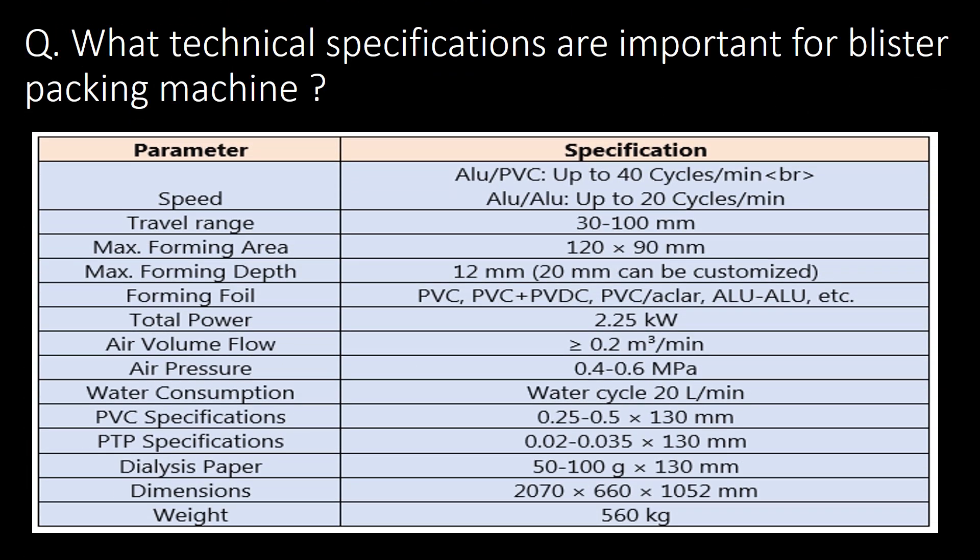What technical specifications are important for a blister packing machine? You can refer to the table below for important parameters and specifications. Important parameters include: speed, travel range, max forming area, max forming depth, forming foil, total power, air volume flow, air pressure, water consumption, PVC specifications, PTP specifications, dialysis paper, dimensions, and weight.